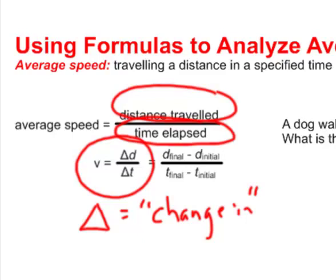You would calculate that by taking the final distance, subtract the initial distance, and find out what the actual distance traveled was. You would do the same thing for time. You would find the final time minus the initial time or the start time and find out how much time went by.